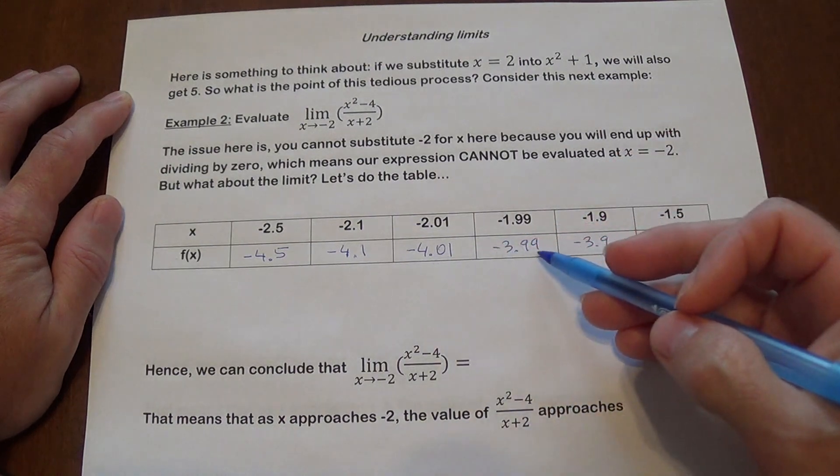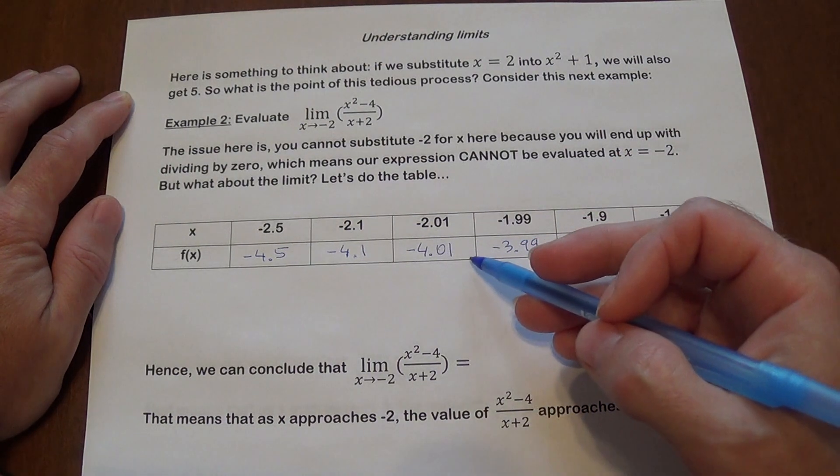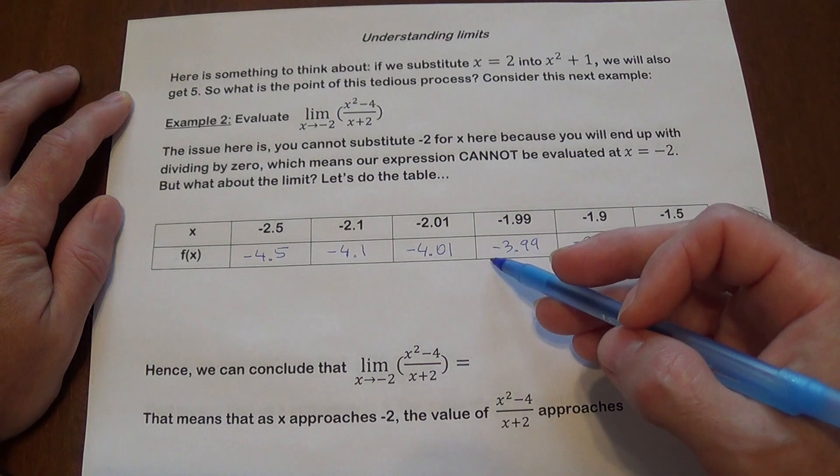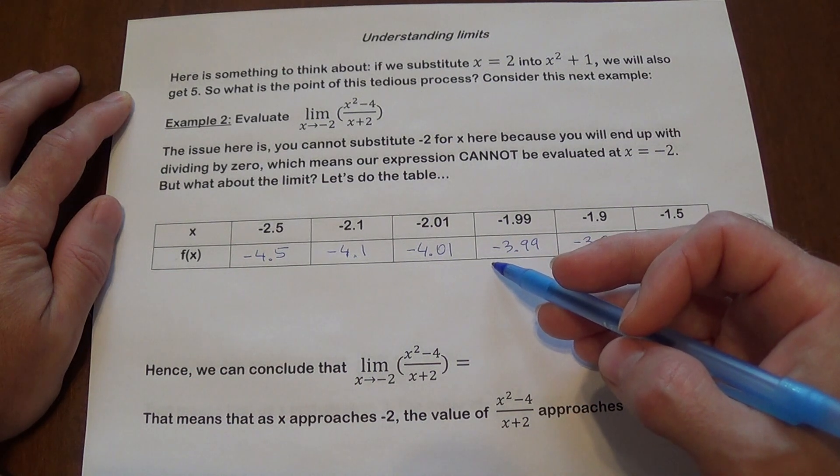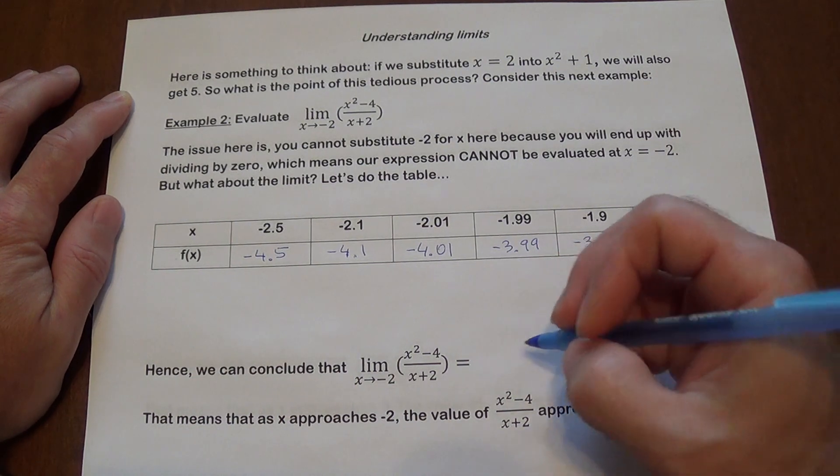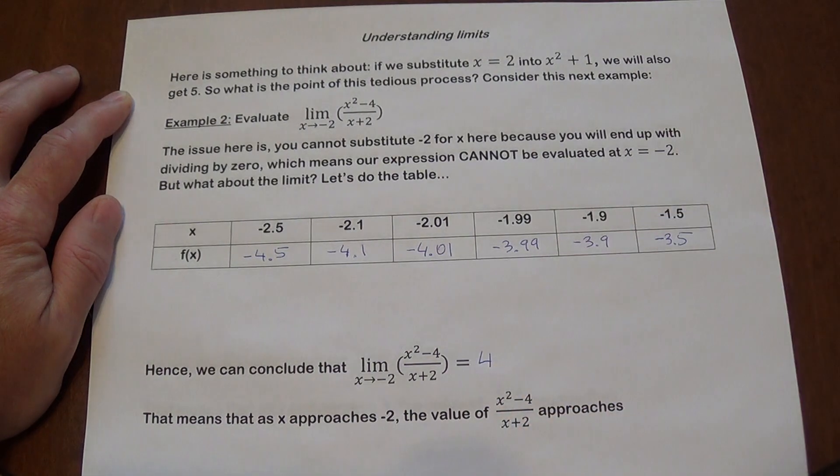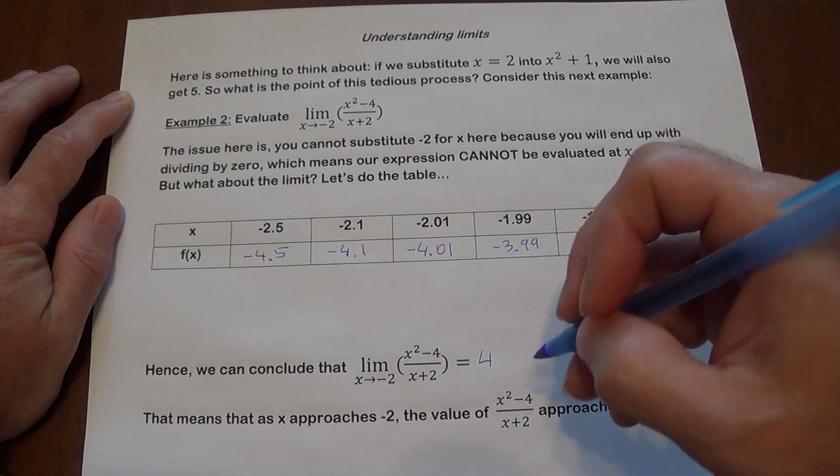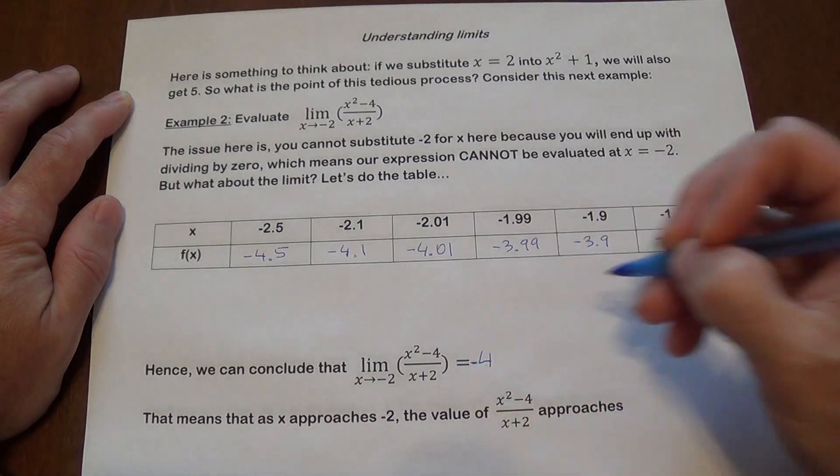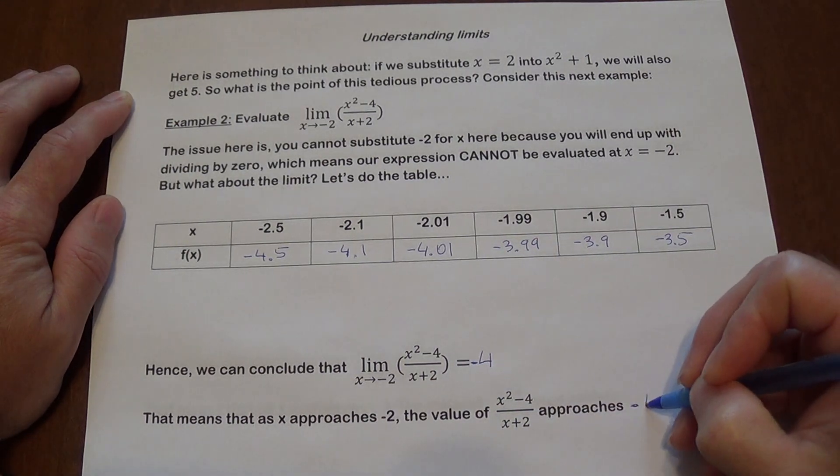So we look very closely what's happening here. I think we can all agree that this is getting closer and closer to 4, right? And that's actually what's going to happen. So the limit here is going to equal negative 4. And that means that as you make x approach negative 2, the value of that expression here is going to approach negative 4.